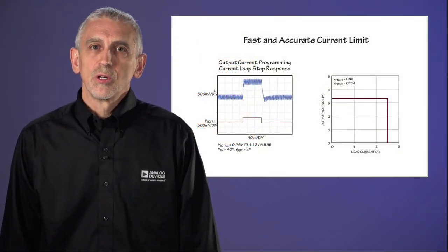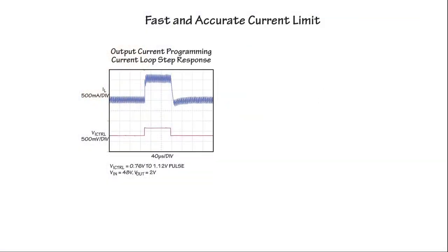The LTC7103 includes a unique average current mode architecture. The LTC7103 offers fast and accurate output current programming and monitoring without the need for an external sensor resistor.